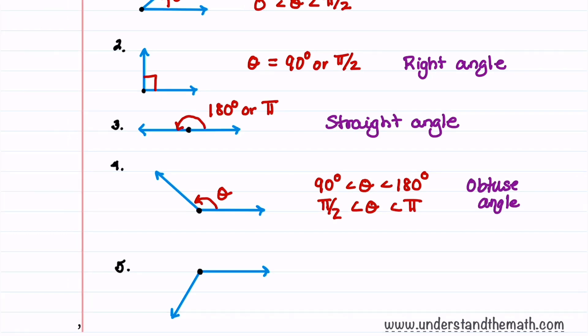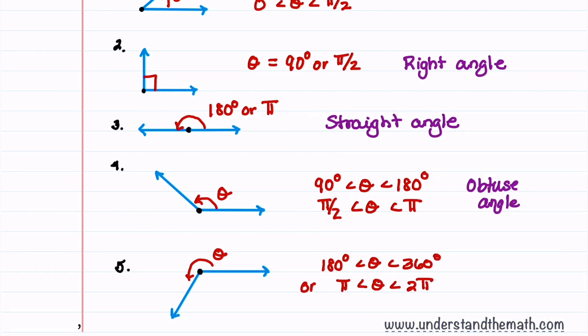Our last angle we're going to label as theta. And for this angle theta is restricted to be between 180 degrees and 360 degrees, or in radian measure, we would say that pi is less than theta is less than 2 pi. And this angle is called a reflex angle.